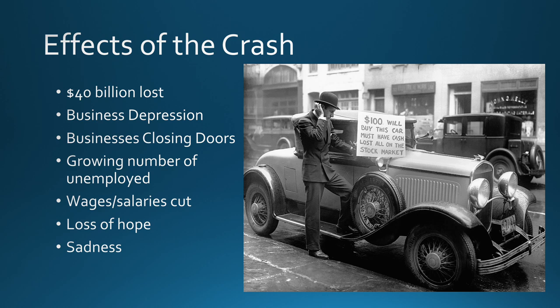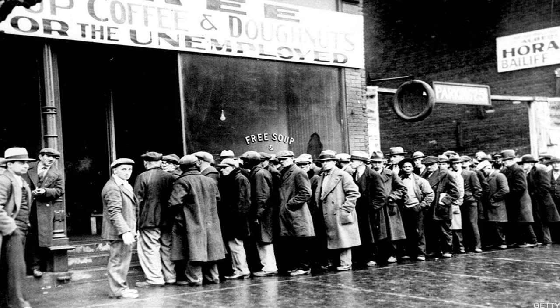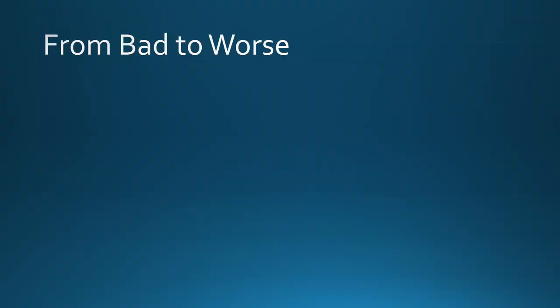I have a lot of pictures throughout this PowerPoint. Here's one — a guy selling his car for $100 because he lost all his money in the stock market. Here we see growing unemployment throughout the Depression — how low it was when the Depression started, and then by 1932 it's up to about 25%. This also becomes a very common sign throughout the Great Depression, as soup kitchens and free coffee were offered to people to try to prevent them from going hungry.